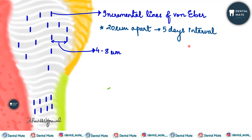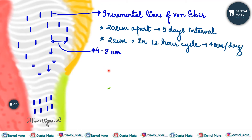Lines that are 20 micrometers apart represent a 5-day interval. Approximately 4 to 8 micrometers are present between lines, and dividing this gives us 2 micrometers of organic matrix deposited in a 12-hour cycle — daily 4 micrometers, with a 12-hour cycle being half, that is 2 micrometers. In a 5-day interval, they are 20 micrometers apart.